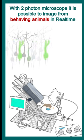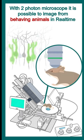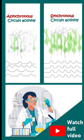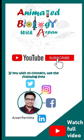Two photon is very useful to monitor behavior of animals in real time and to image neuronal circuit activity in real time. That's how it is very attractive to neuroscientists.